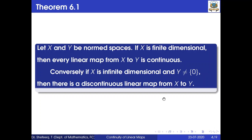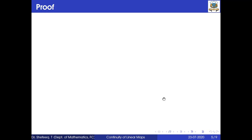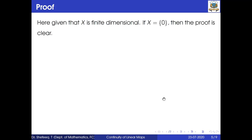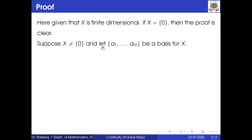For the proof of Theorem 6.1, given that X is finite dimensional: if X is the singleton {0}, the proof is clear — we have f(0) = 0, so 0 maps to f(0), making f a constant function and therefore continuous. Now suppose X is not equal to {0} and take a basis for X as a1, a2, ..., am.